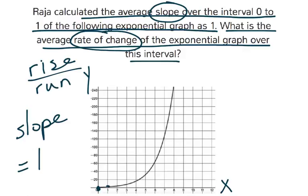And the run is just telling us, for one unit of x change, how much is the y changing. And so in this case, it's also just 1 as the average rate of change.